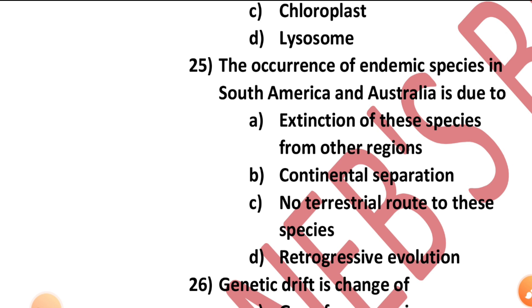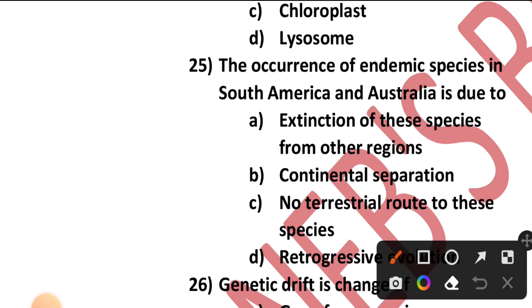Question number twenty-five: The occurrence of endemic species in South America and Australia is due to — extinction of species from other regions, continental separation, no terrestrial route, or retrogressive evolution? It is because of continental separation. Option B is the correct answer.